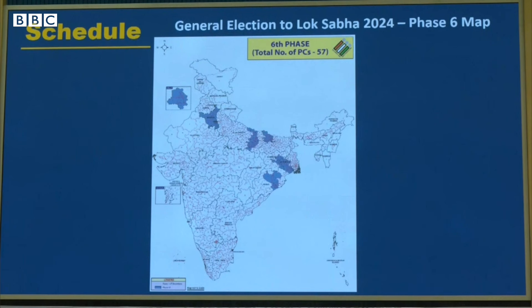Phase 6 will have 57 constituencies going to the poll, starting from the gazette notification on 29th of April and finishing on 25th of May 2024. The map for this phase will look something like this — mostly Uttar Pradesh.